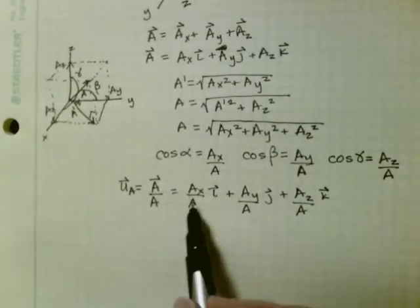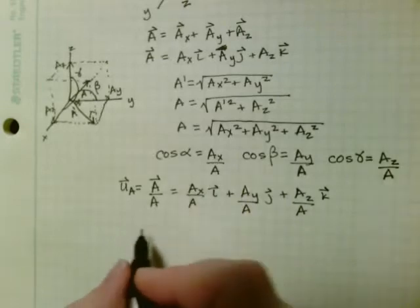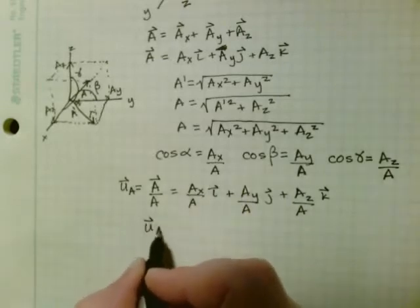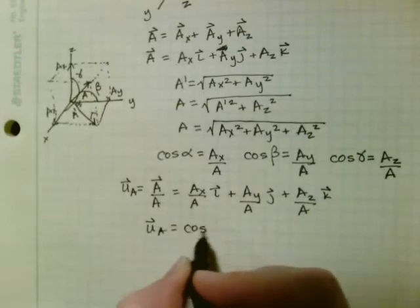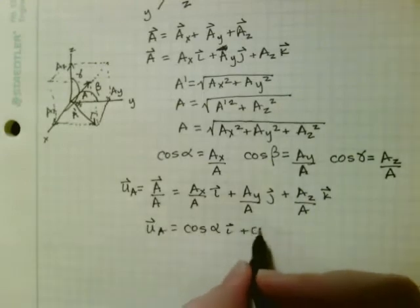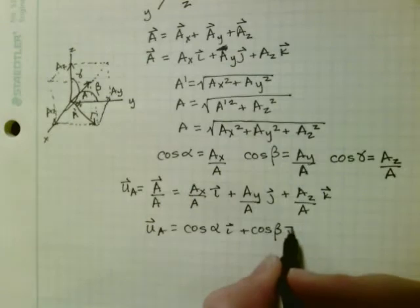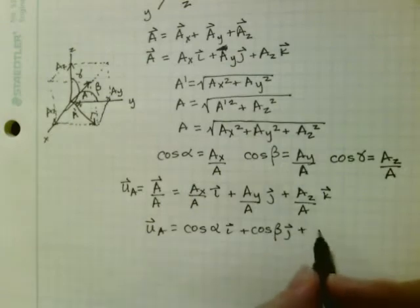And so this and this equation can combine such that the positional vector is cosine alpha i plus cosine beta j plus cosine gamma k.